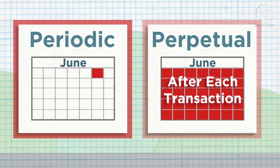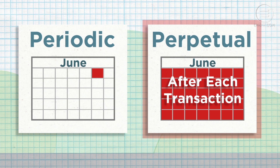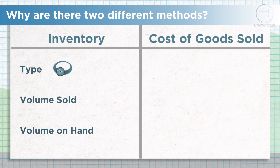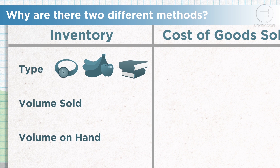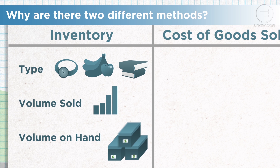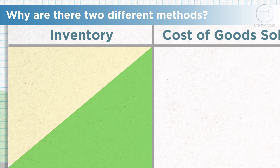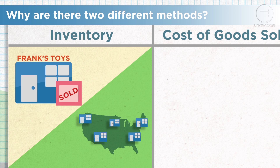You may be asking yourself why there are two different methods of inventory management. There are actually two different answers. First, the inventory system you use depends on your business's type of inventory, the volume of inventory sold, and the volume of inventory on hand. Your small toy store has a very different volume than a national chain, so it may require a different inventory system.